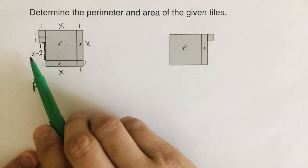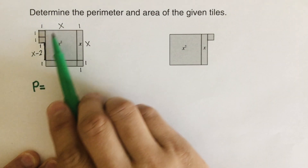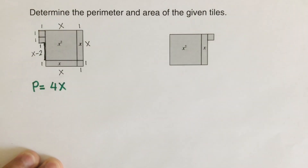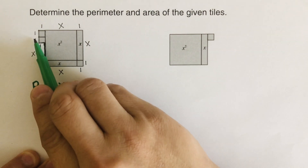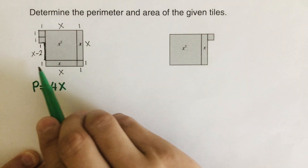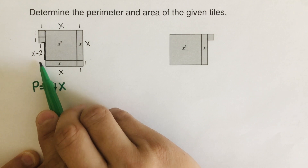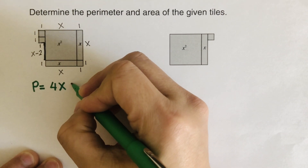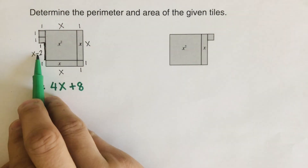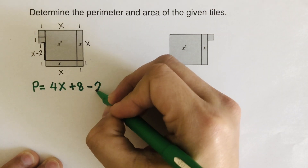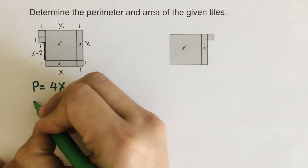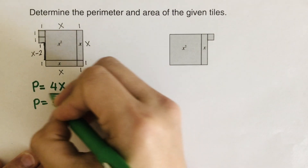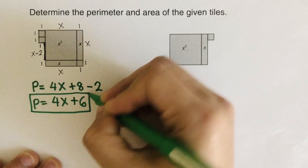To find the perimeter, add all the x's: one, two, three, four — that's 4x. Count all the ones: one through eight — that's plus 8. We still have a minus 2, so write minus 2. The perimeter is 4x + 8 − 2, which simplifies to 4x + 6.